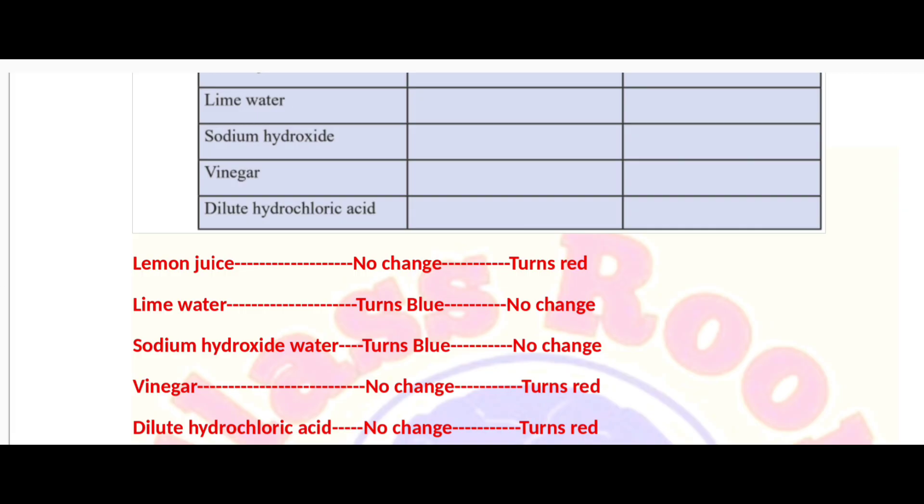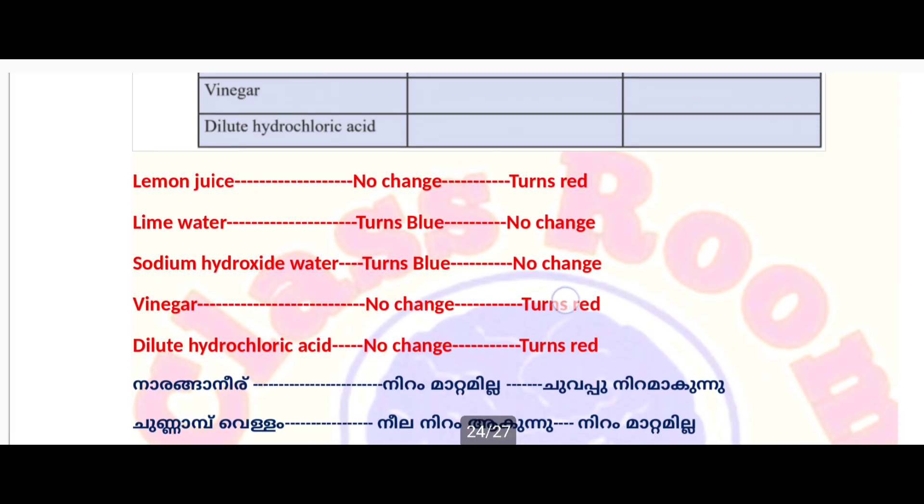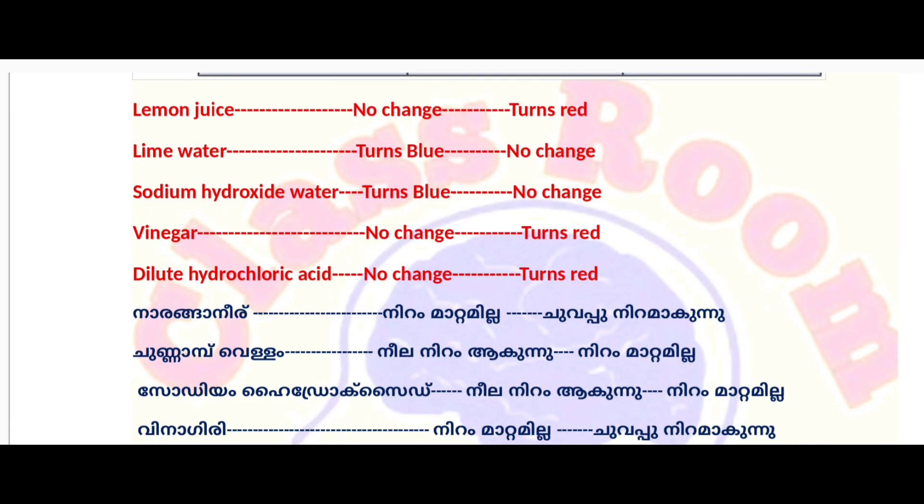Lemon juice is an acidic substance. Red litmus paper shows no color change. Blue litmus paper turns red.